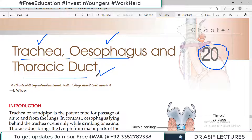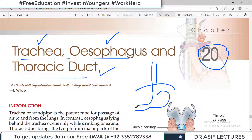These tubes are present in the thorax but not entirely so. The trachea continues from the cervical region into the thorax. The esophagus starts from the pharynx and passes through the thorax. The thoracic duct starts from the lower abdomen, crosses all the way through the thorax, and goes to the root of the neck to finally drain into the veins.